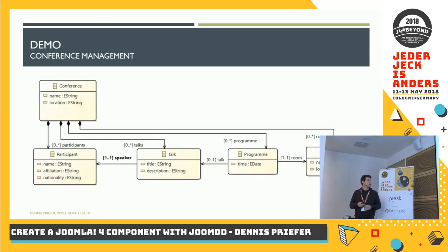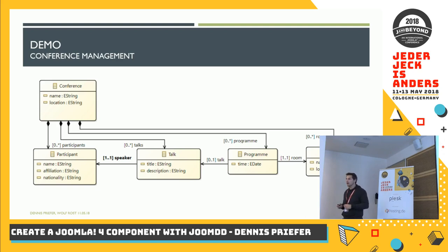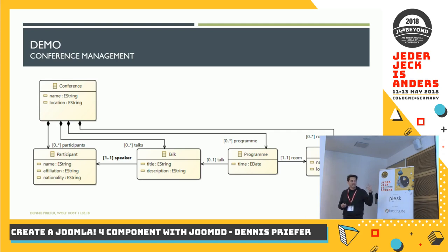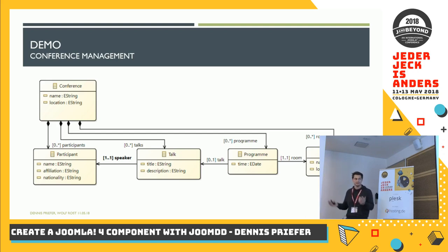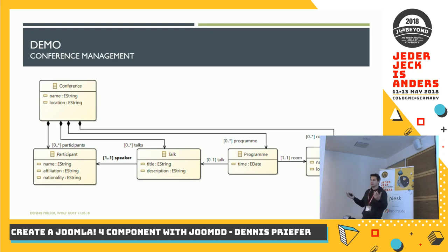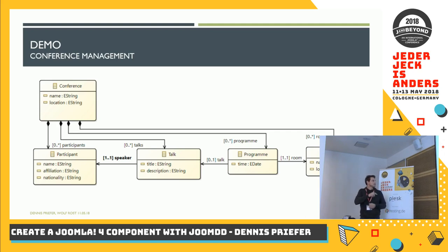Now let's come to the demonstration. Today, to stay in time, we will show the development of a conference management component. We have a small set of entities to manage, but it doesn't depend on the amount — you can create a component with 200 entities. For each entity we want to have the typical Joomla pages for management, like list views and edit views for CRUD operations. We have the conference model, participants, talks, a program, and a room.